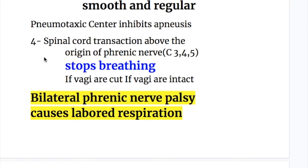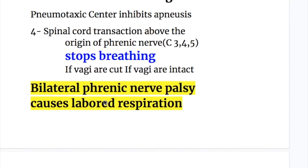Spinal cord transection above the origin of the phrenic nerve — that is, above C3, C4, C5, the root value of the phrenic nerve — stops the breathing. And bilateral phrenic nerve palsy causes labored respiration.